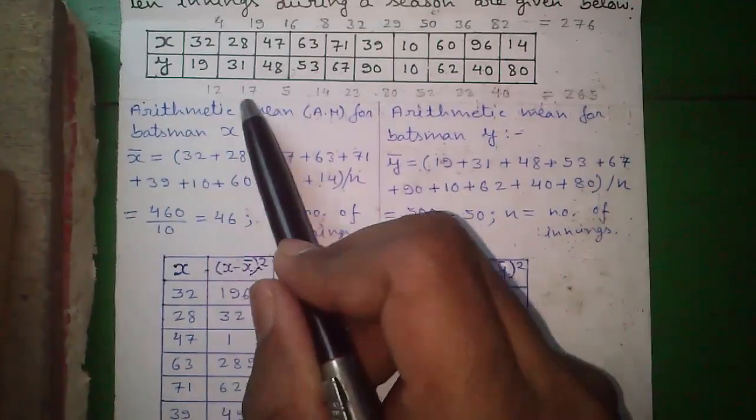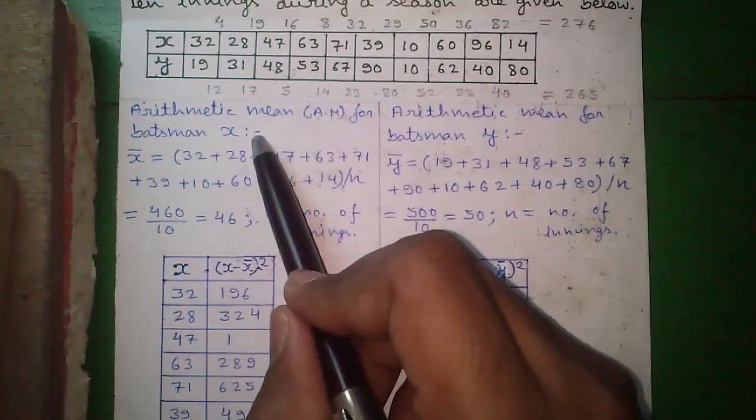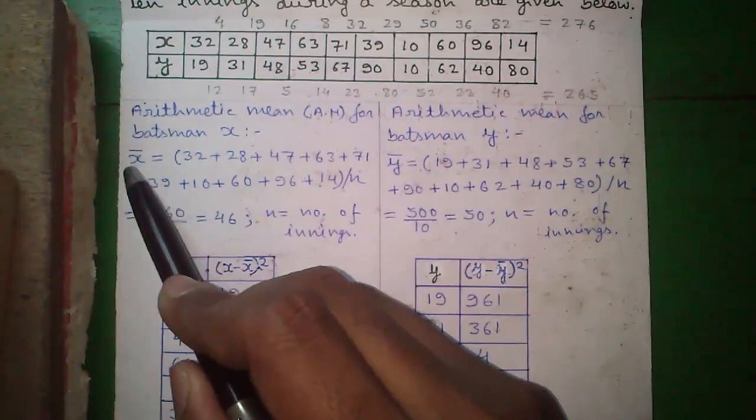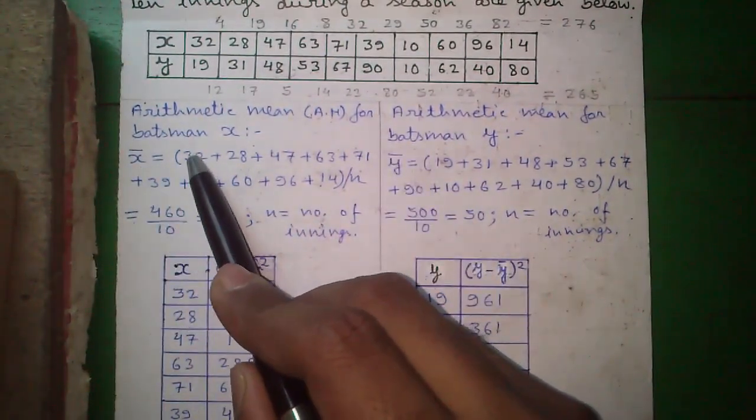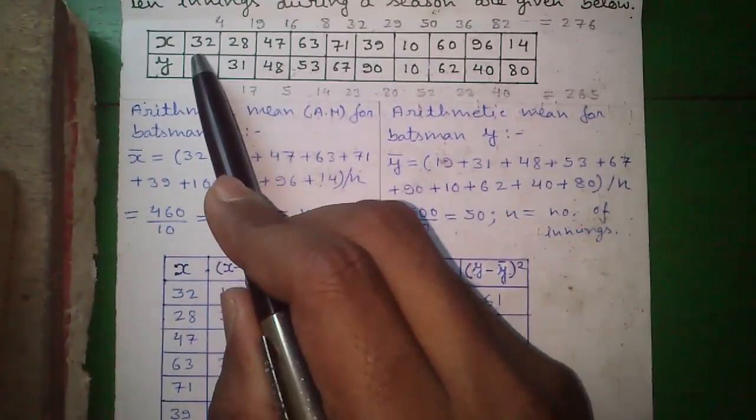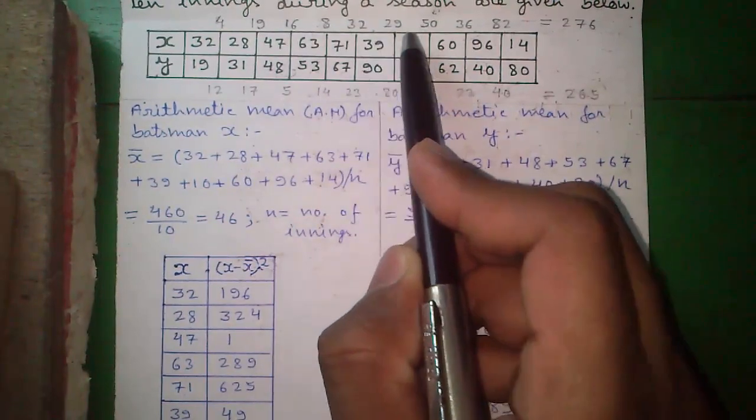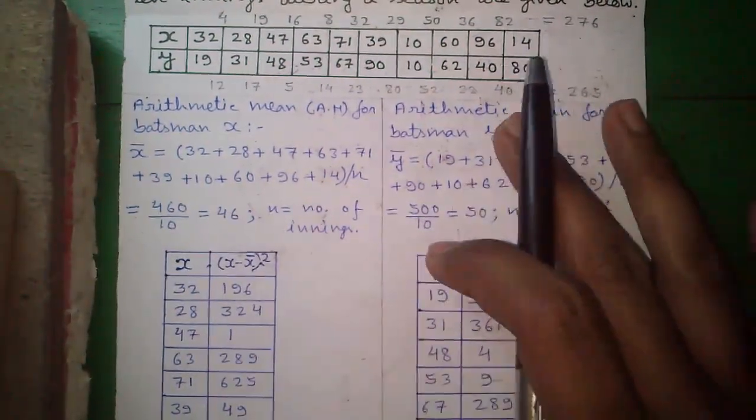Our first method, for that we have to find out the AM or arithmetic mean for batsman X. AM is represented by X bar for X and Y bar for Y. So X bar is given by sum all X values divided by number of samples and number of samples are 10. So that is 460 by 10 is 46.